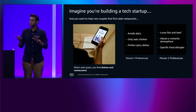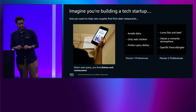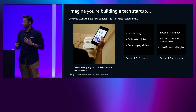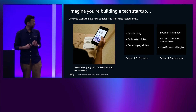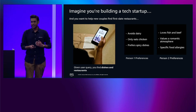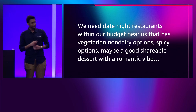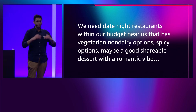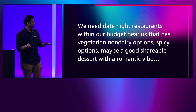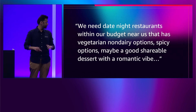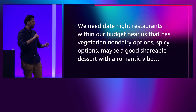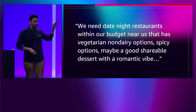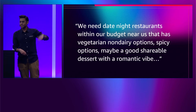So you do some user studies. You sit down with these couples and you realize that the conversation goes back and forth. People think about what they're looking for, and they eventually land on something like: "We need date night restaurants within our budget near us that have vegetarian non-dairy options, spicy options, maybe a good shareable dessert with a romantic vibe." A really complicated set of preferences.